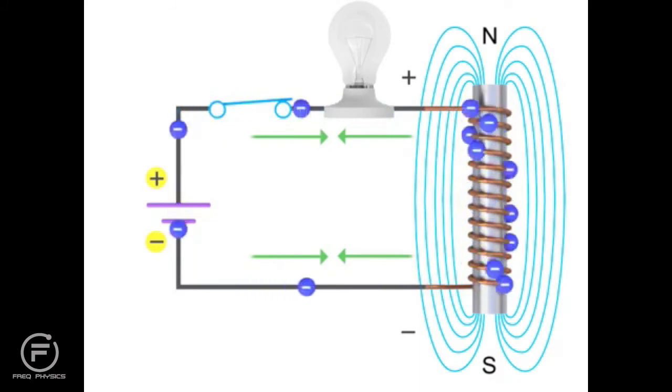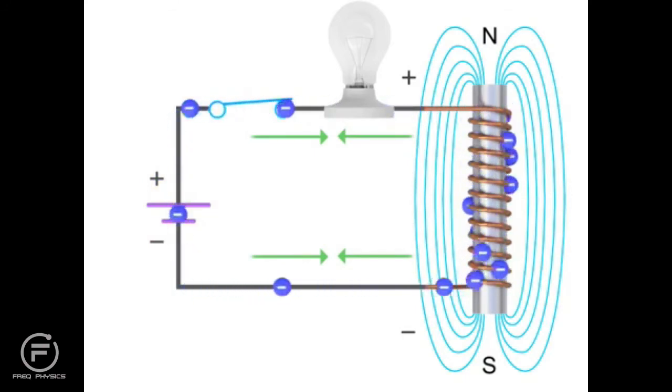The maximum opposition to current flow occurs at the instant the switch is closed. Therefore, the bulb will not turn on instantaneously.